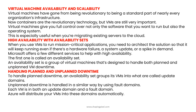To handle planned downtime, an availability set groups VMs into what are called update domains. Unplanned downtime is handled in a similar way by using fault domains. Each VM is in both an update domain and a fault domain, and Azure will distribute your VMs into these domains automatically.